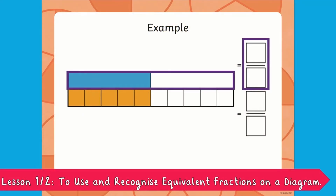And how much of it is highlighted? I can see that one of the two are highlighted in blue, so that is going to be one. So the top one represents one half.